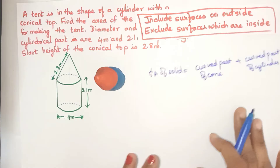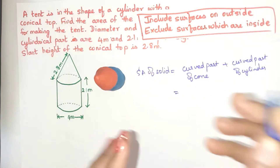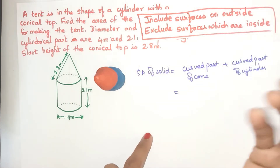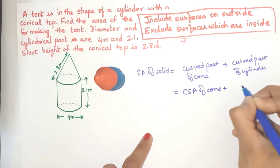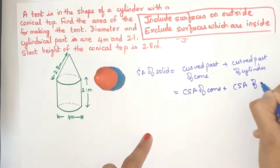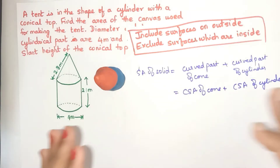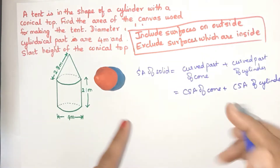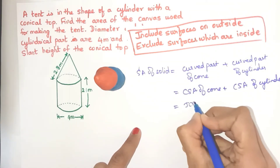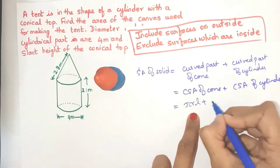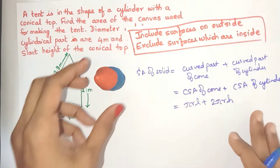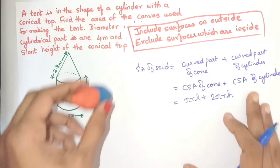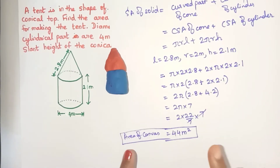So these are the surfaces we include. The curved part of the cone is given by the CSA of the cone, which is πrl, and the curved part of the cylinder is given by the CSA of the cylinder, which is 2πrh. It's very easy once you know the method. Substituting and solving, the area of canvas needed to cover the tent is 44 meters square.